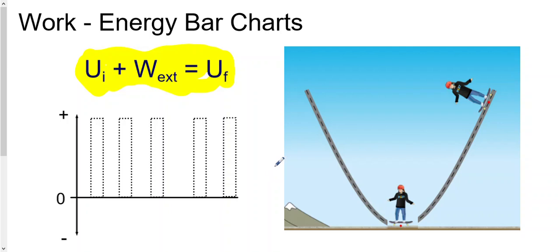We are now on work-energy processes. We learned from the previous chapter that we can represent a conserved quantity — momentum in chapter 5 — using a bar chart. Knowing energy as another conserved quantity in an isolated system, we can represent work-energy processes using a bar chart as well. Your goal is to show understanding of this equation.